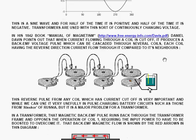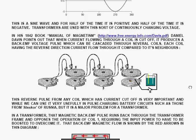Transformers are always used with this sort of continuously changing voltage. In his 1842 book Manual of Magnetism, Daniel Davis points out that when current flowing through a coil is cut off, it produces a back EMF voltage pulse which can be cascaded through several coils, each coil having the reverse direction current flow through it compared to its neighbors. And every one of those gets energized when this switch, which was closed, is opened. That cuts off the current flowing in coil number one and creates that back EMF voltage spike.